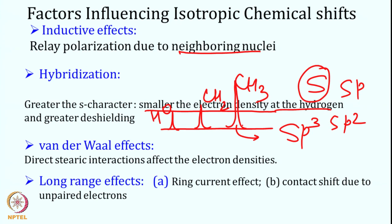The next effect is the van der Waals effect — direct steric interaction affecting electron density. If two atoms approach each other closely, the electron density is influenced by the increasing density of the neighboring nuclei. For example, in a protein, a moiety buried inside versus one exposed to solvent will have different electron densities around that nucleus, and therefore different chemical shifts.